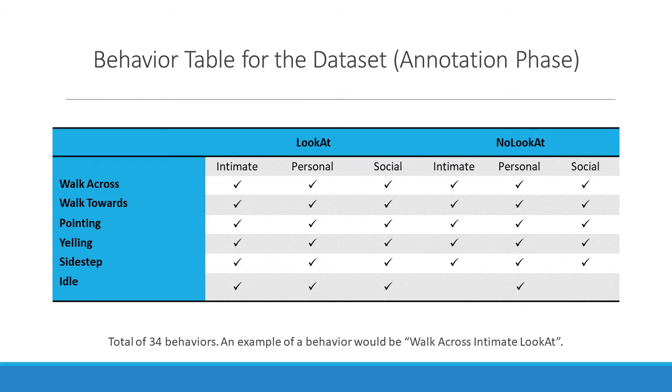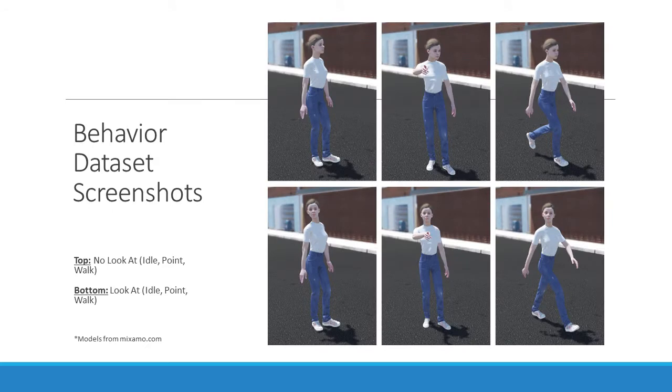The behavior of each character may be the same with the idle, no look at state as the base state. This is a sample behavior table for how we created the behaviors. For an example, you could take a single behavior to be the combination of, let's say, walk across, intimate, and look at. So, these three factors combine to give you one behavior. Similarly, walk across, personal, no look at would be another sort of behavior. In total, we had 34 behaviors. These are some of the example screenshots of how the models look like up close in the VR scenario. On the top, you have the no look at and the bottom, you have the look at. Again, all models were imported from Mixamo.